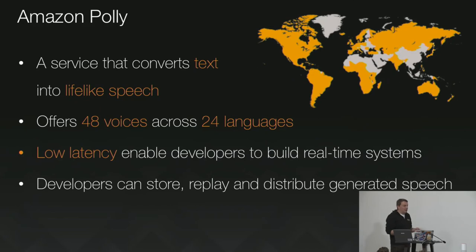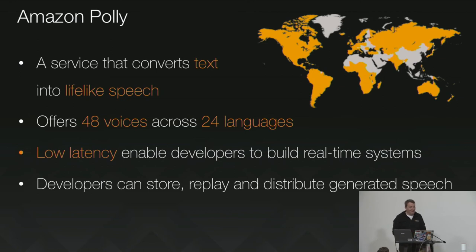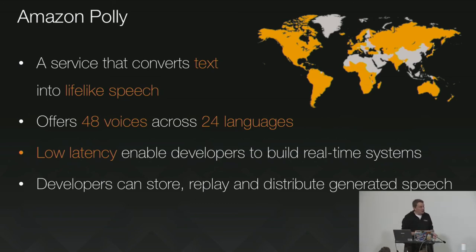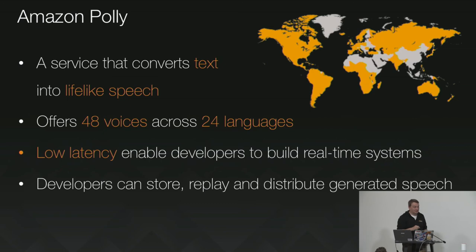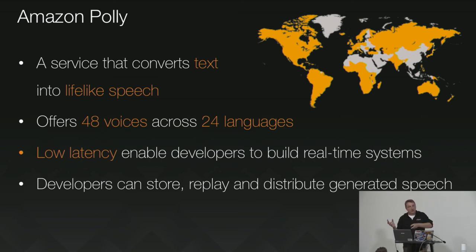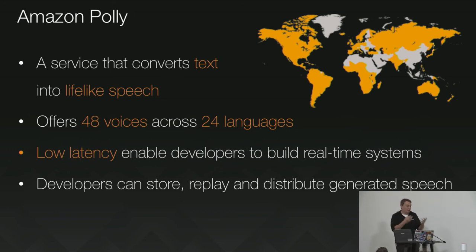The second service is Polly — text-to-speech. It's text-to-speech in 24 languages and 48 voices: male, female, and even a few children's voices. It's as easy as it sounds — build your text string, send it to an API, get a sound file in real time which you can play or store and reuse later.